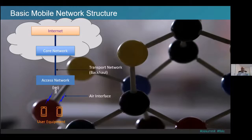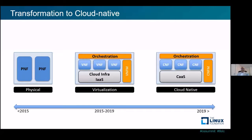Let's see how initially the telecommunication network was built using physical network functions (PNF), which were deployed manually on proprietary hardware and software in most cases. Then we got OpenStack and the PNFs were transformed into virtual network functions (VNF), hosted on the infrastructure-as-a-solution platform powered by OpenStack.